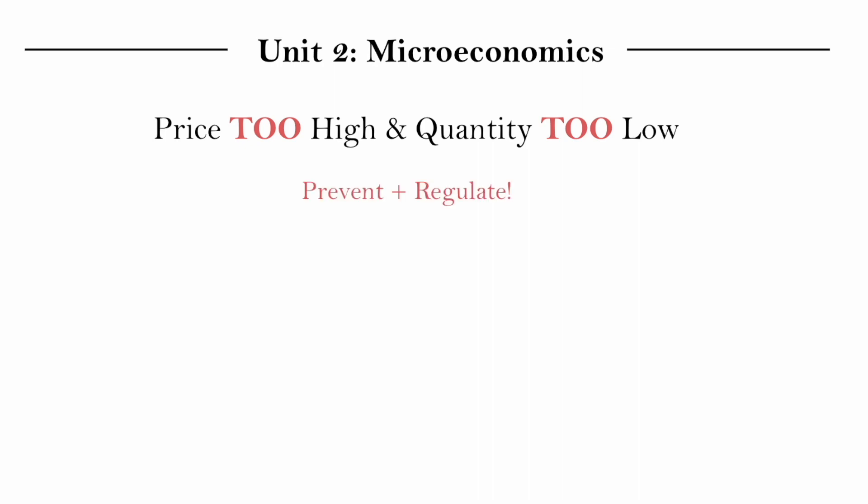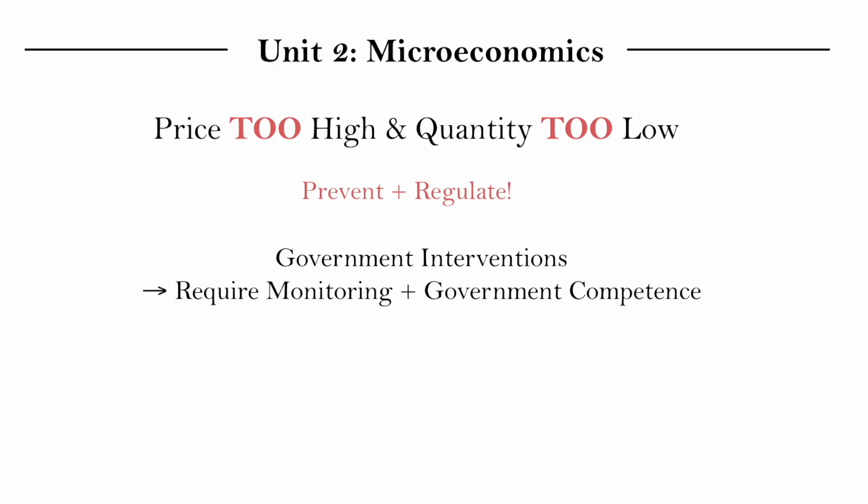There are measures to prevent and address monopolies. Note that these measures are forms of government intervention, so they require lots of monitoring and government competence to be carried out. One of the things you can evaluate in your papers is you can suggest these measures as a solution. But depending on the country you are talking about, you can say this may not be as effective because a government that is not very competent — one that has corruption and lack of organization — may not be able to carry out these measures in a way that will actually be impactful.